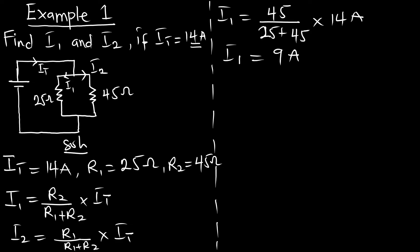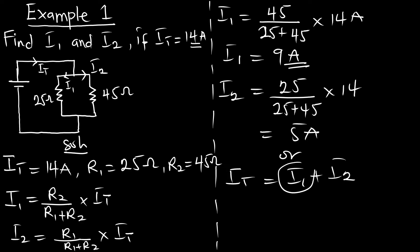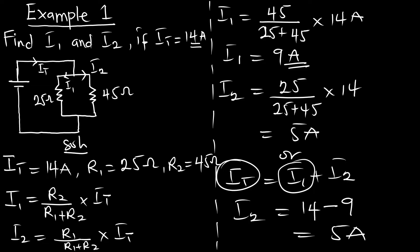And i2 is also going to be R1 which is 25, on 25 plus 45, multiplying 14 amperes, and that gives us 5 amperes. After getting i1 you can also use the relation It equals i1 plus i2 to check your answer. So i2 equals It minus i1, which is 14 minus 9, giving 5 amperes. If you are not restricted to use the current divider rule, you can also use this relation to get your answer.